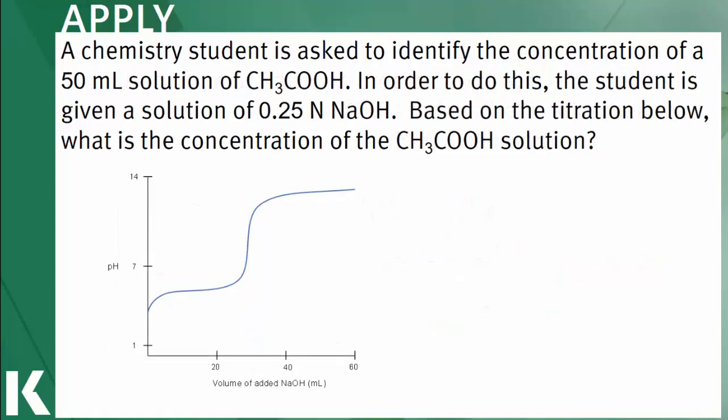The second applied question asks us to calculate the concentration of acetic acid. We're told that the sodium hydroxide has a concentration of 0.25 normal. Taking a look at the graph, the inflection point of the line is approximately 30 mL, which represents the equivalence point.